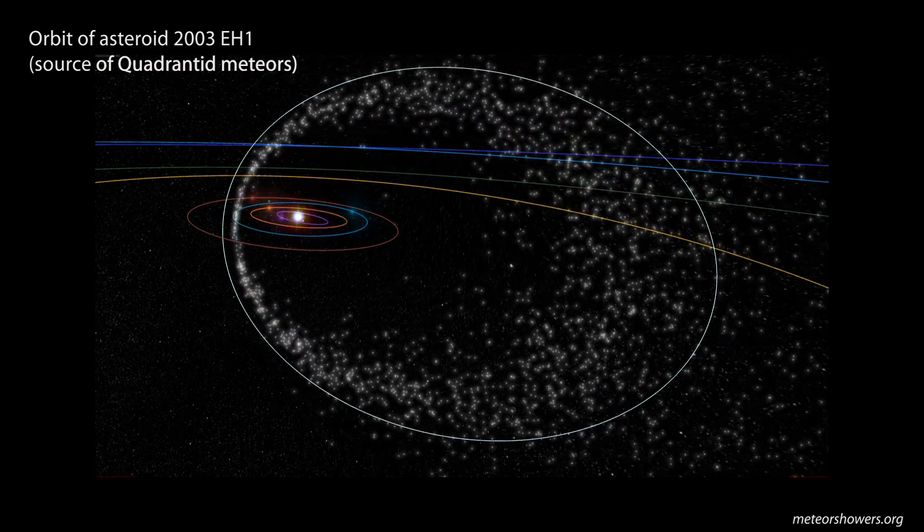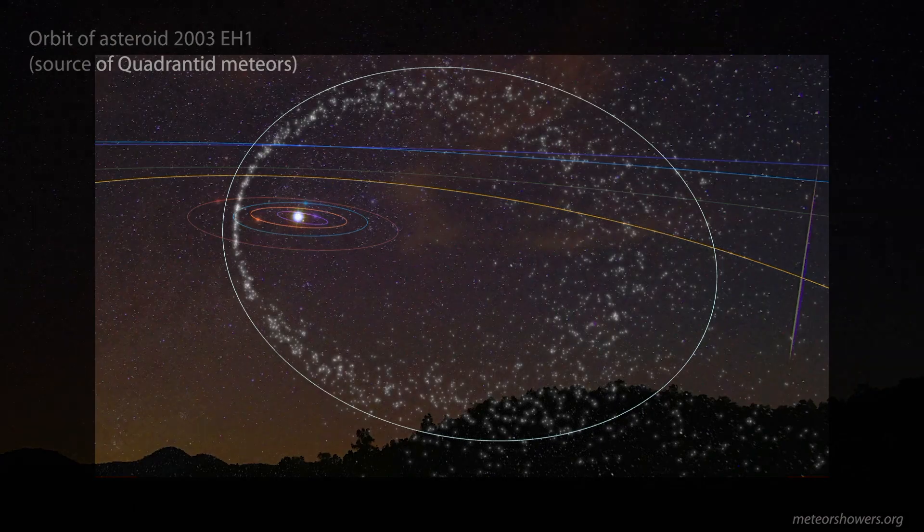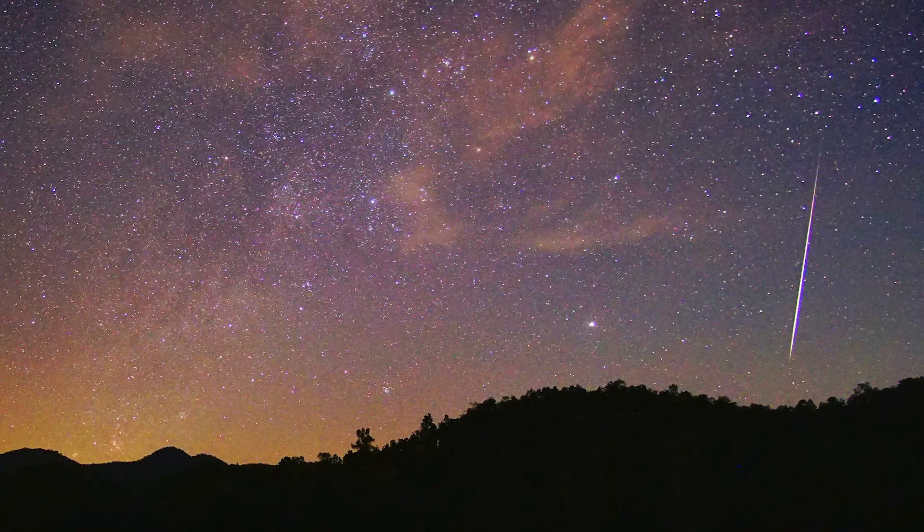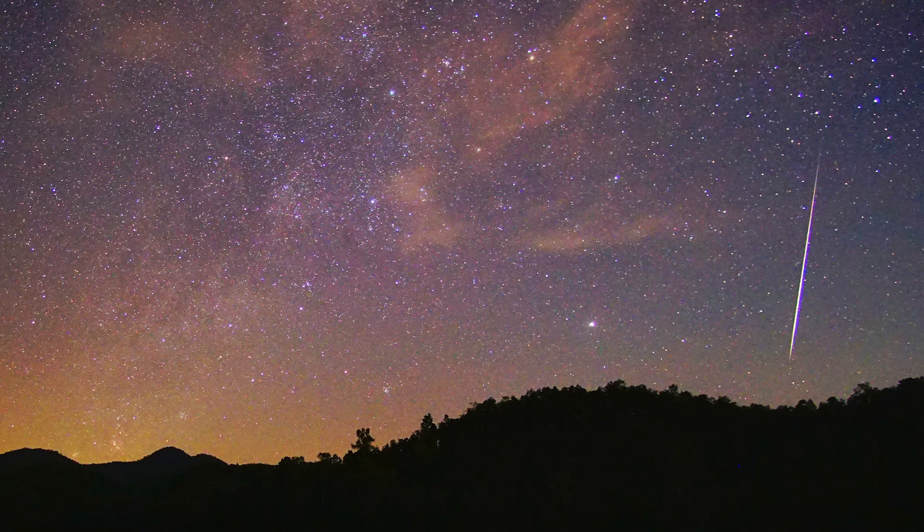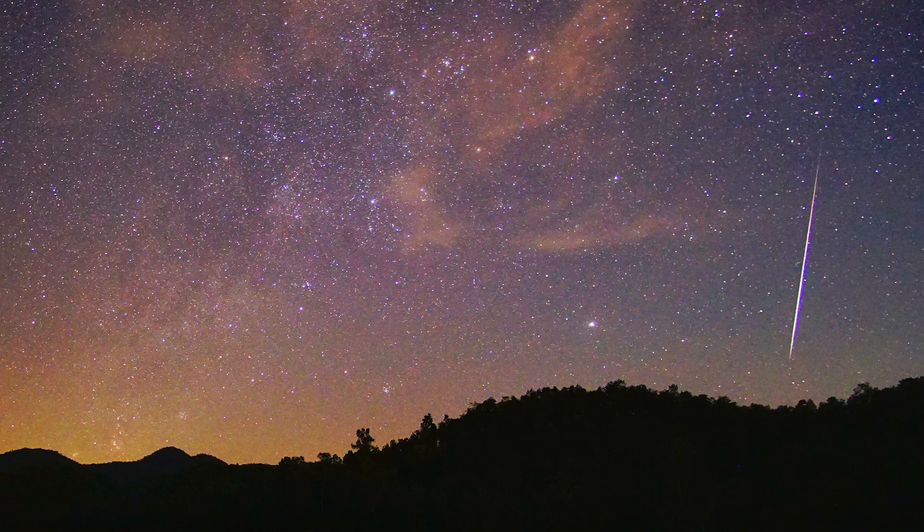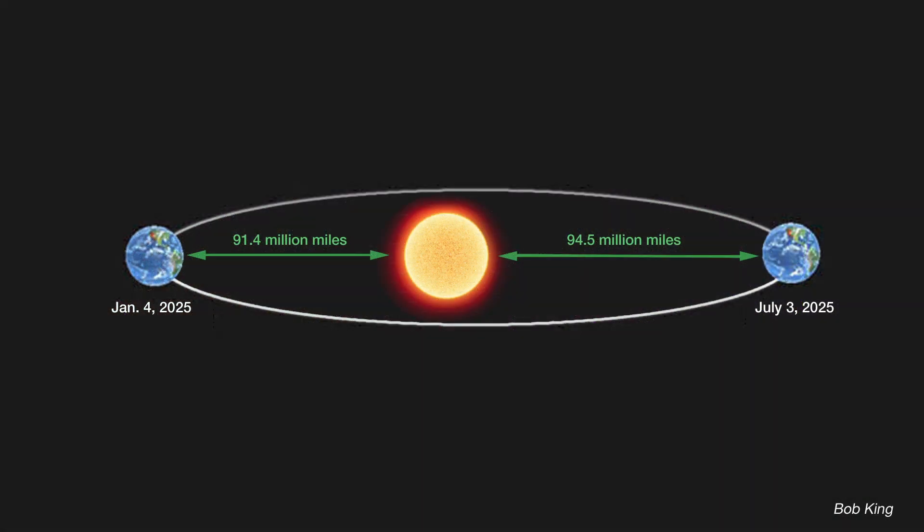Unfortunately, this year the peak occurs during daylight for the Americas. Still, this shower tends to have a lot of bright arrivals, so it's worth taking a look during evening on the 3rd. Interference from a crescent moon will not be a problem. And the second event is that Earth is closest to the Sun in its orbit at about 8 a.m. Eastern Standard Time on January 4th.